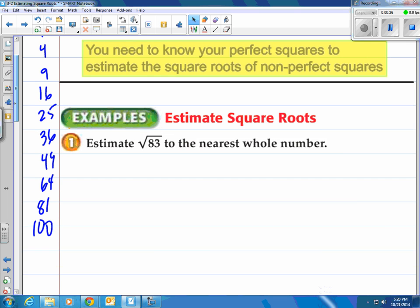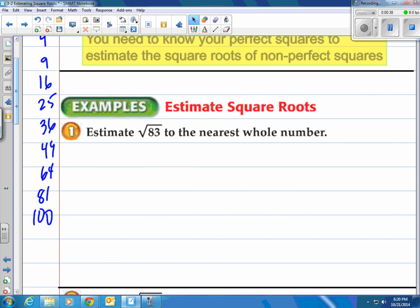Let's take a look at this first one. I'm trying to estimate the square root of 83. The square root of 83 is going to be an irrational number. It's a non-terminating and non-repeating decimal. It goes on forever. So to estimate the square root of 83 we need to find the perfect square that's above 83 and the perfect square that's below 83.